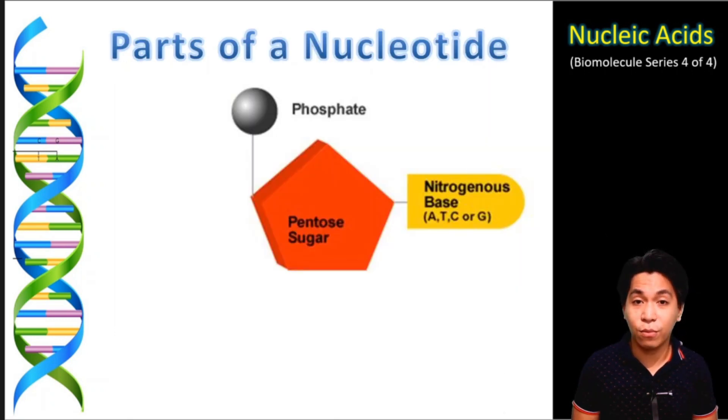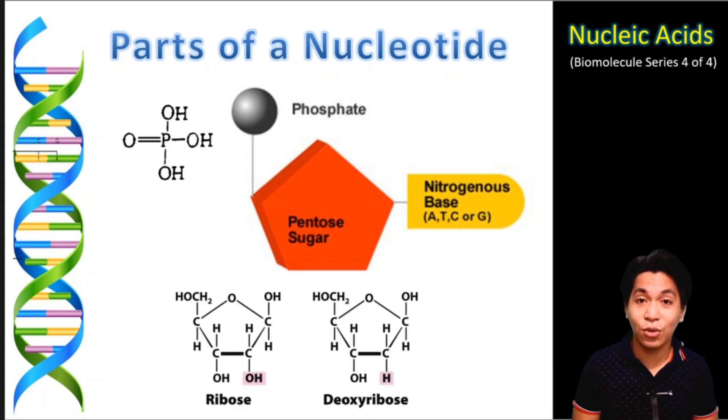Nucleotide is the monomer for nucleic acids because nucleotides are the building blocks in creating nucleic acids. This nucleotide is composed of three major parts which are the phosphate group, a pentose sugar, and a nitrogenous base. The phosphate group in a nucleotide is similar to the phosphate group found in phospholipids.